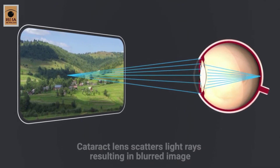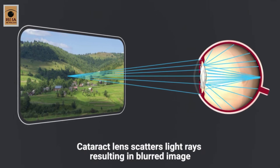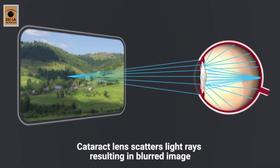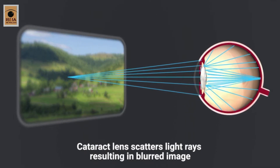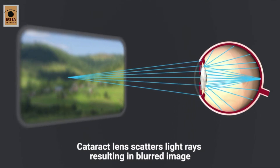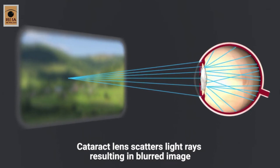In cataract, due to clouding of the lens, the light rays from an image cannot pass through the lens easily. The clouded lens scatters the light and prevents the formation of a sharp image on the retina. As a result, a blurred image is formed.